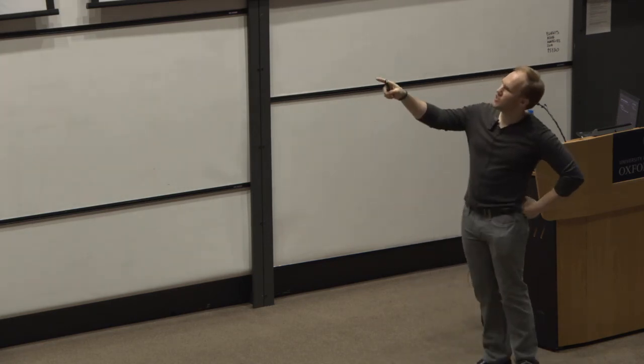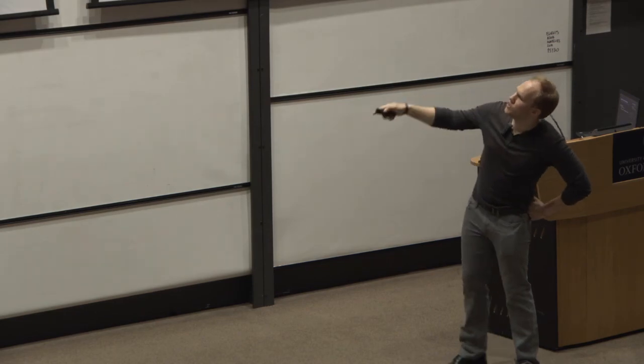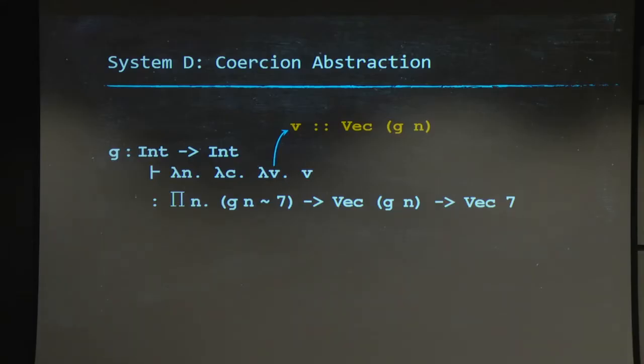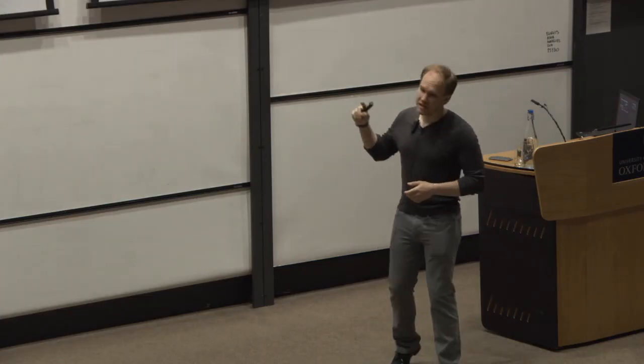But notice that there's something fishy going on here. Because when we introduce v, we introduce it as a vector of size g of n. But when we return it, it is a vector of size 7. So it just changed type on us. And for that, we can implicitly use c, our coercion, to cast v.